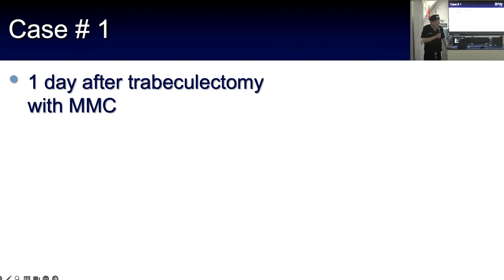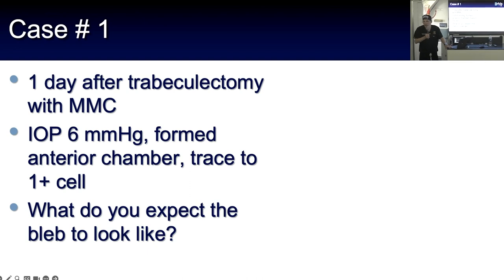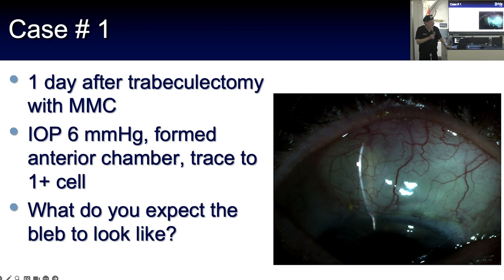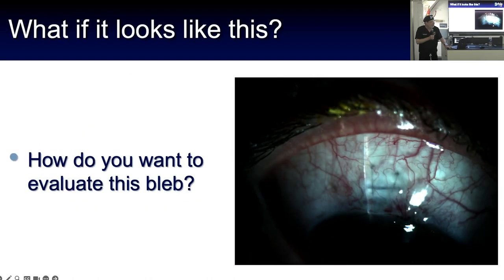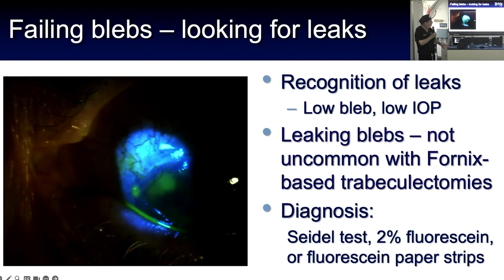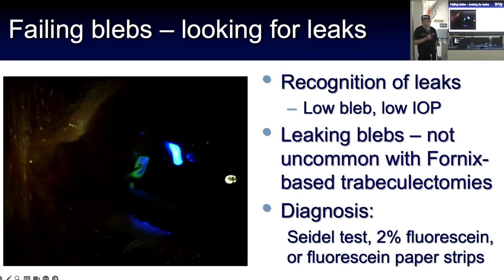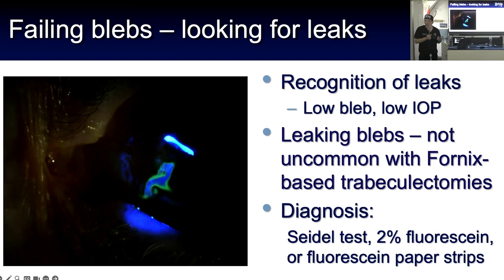Case one: one day after a trabeculectomy with mitomycin C, the pressure is 6 mmHg with trace cell in the anterior chamber. The bleb shows very little amount of bleb, so you want to evaluate for a leak. The patient had low pressure but a flat bleb — this is not uncommon with fornix-based closures. A Seidel test can sometimes be subtle, but here it's quite brisk. This needs to be fixed pretty quickly after surgery.